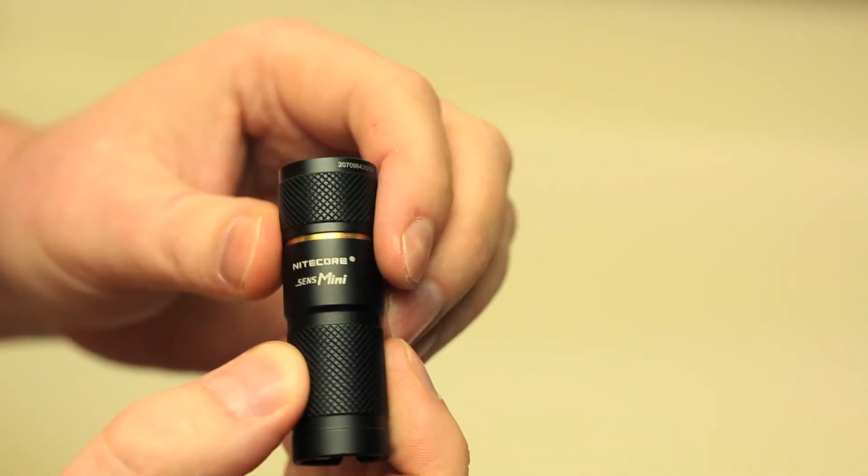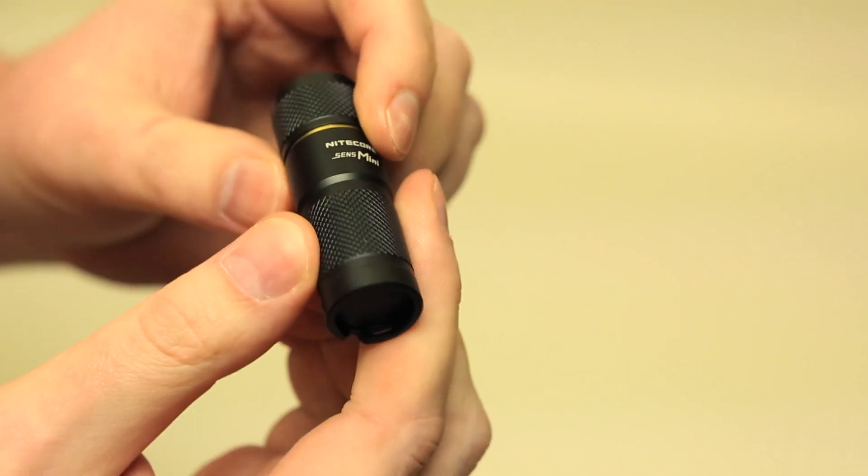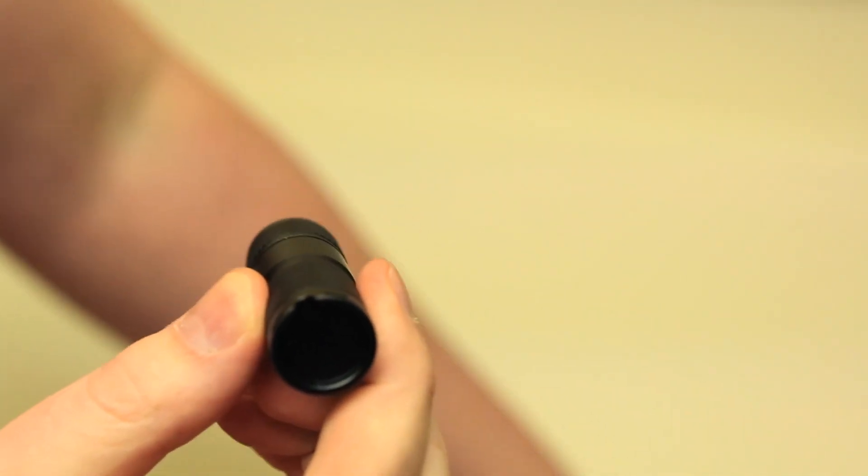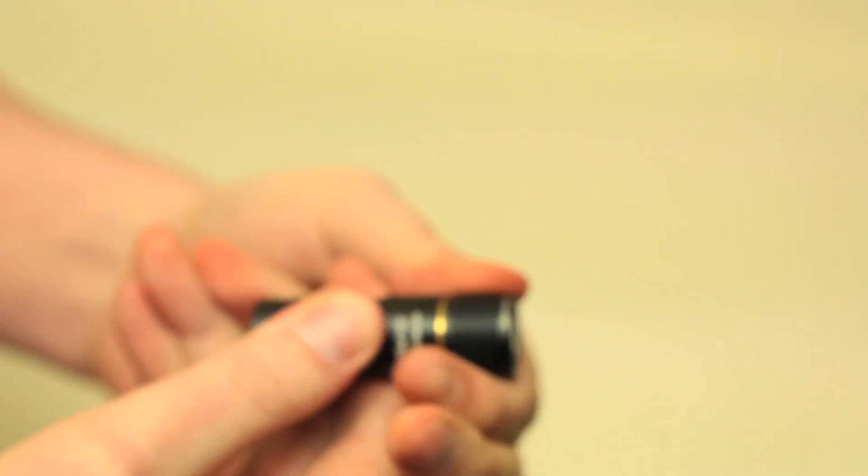You got a max run time of about 14 hours. Tiny size, perfect for a keychain, your purse, your pocket. It actually comes with a little key ring there. Extra o-ring. This thing is waterproof. See there's no switch on it. Just turn to activate.